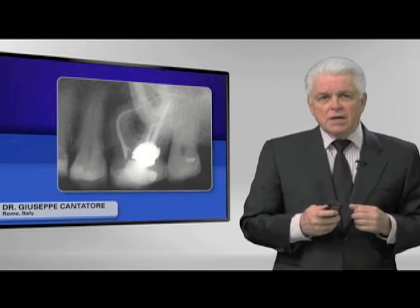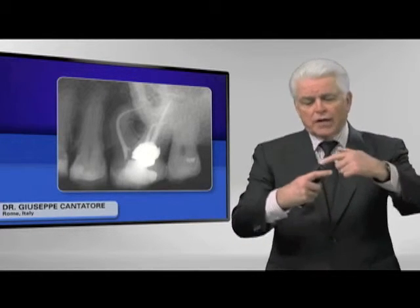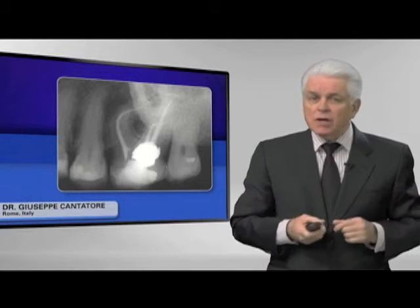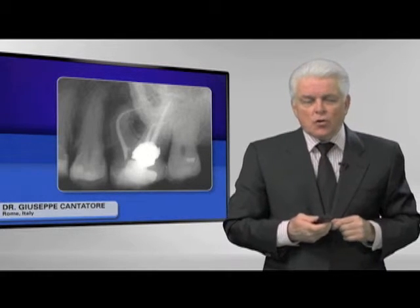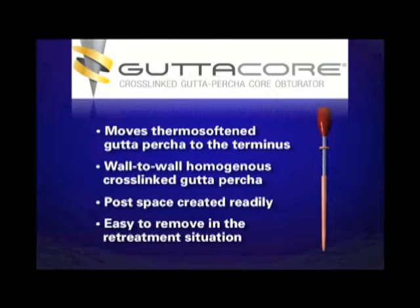The new idea is not a polysulfone carrier or plastic with alpha gutta percha around it, but a different way to manage the system for a more effective seal. Giuseppe Cantatore has been one of the pioneers; Ben Johnson, Steve Nimczyk, and Bill Henson have done tens of thousands of cases. I want to talk about GuttaCore — GuttaCore has replaced the stigma of the polysulfone plastic carrier.